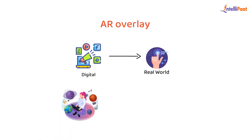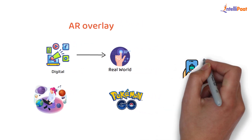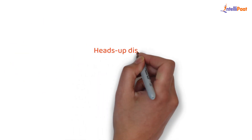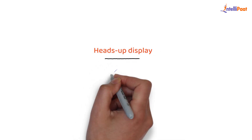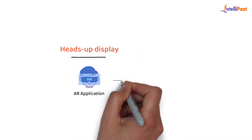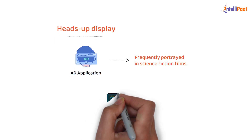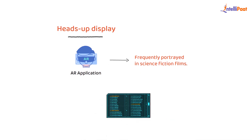Pokémon Go is among the first successful augmented reality games. On-screen information is displayed right on a car or airplane windshield during operation.